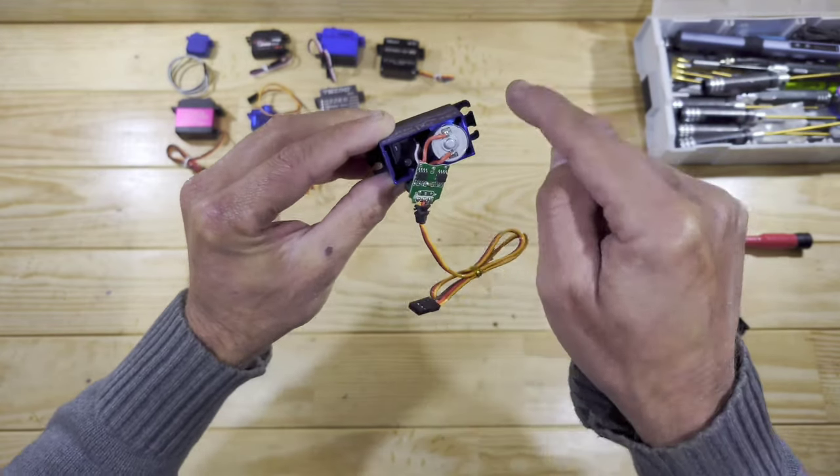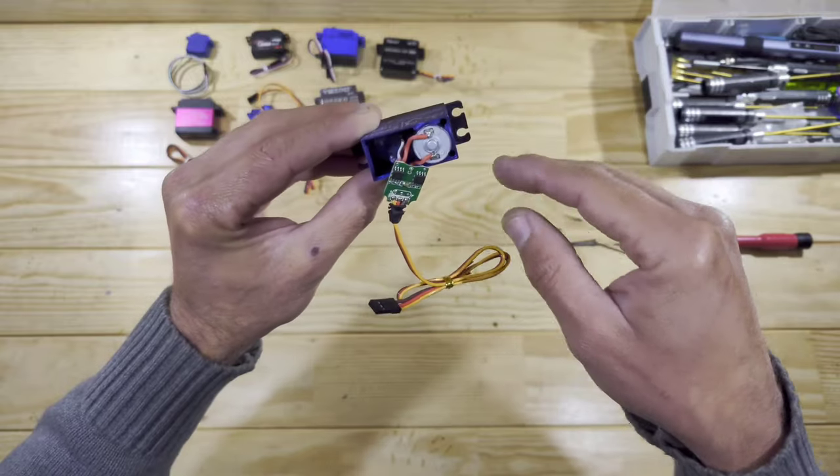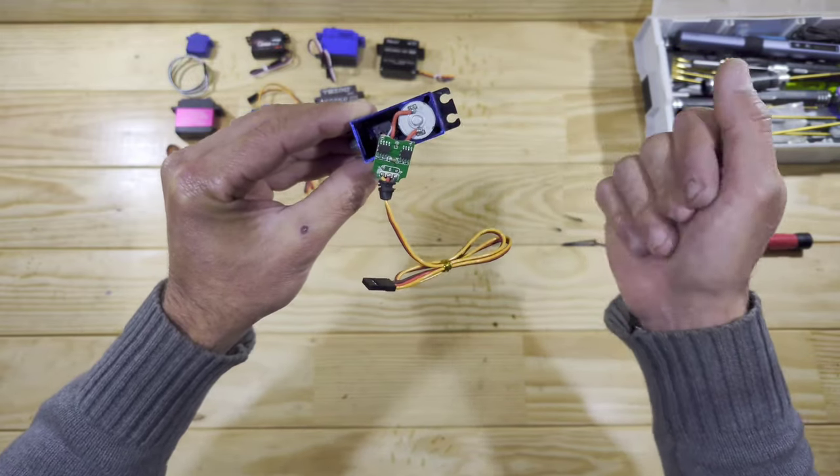Inside there you will find the potentiometer. The potentiometer is sitting there to tell this little board in which direction the servo horn is positioned. And that's the basic understanding of a servo.